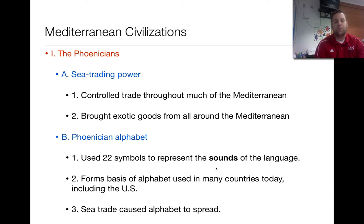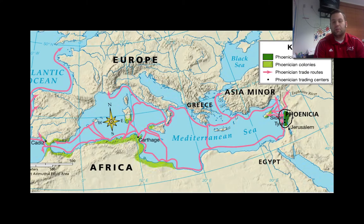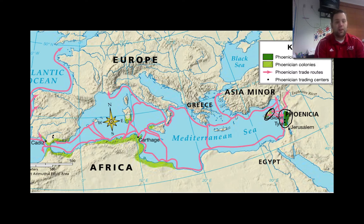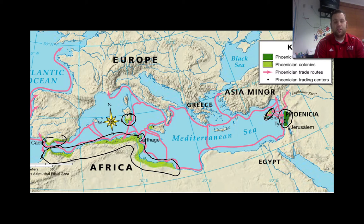Their colony was in what we would consider today Israel and Syria — over here is Jerusalem, the modern-day capital of Israel. They had colonies on the island of Cyprus, in Spain, along modern-day nations in Africa, and a few others as well. Their colonies were strategically placed so they could control trade, which was unique because they were really the only people at this time venturing out into the seas to control these trade routes.